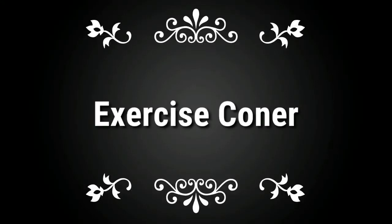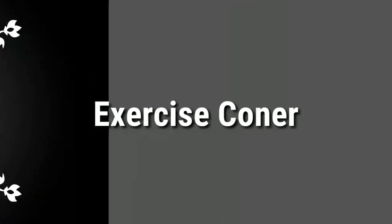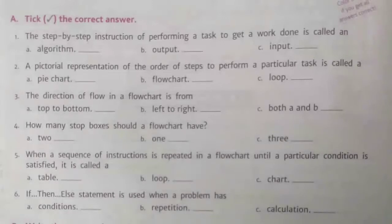Good morning dear children. Today let's discuss the exercise corner of our 10th chapter, algorithms and flowchart. Take page number 122. Here we can see 'tick the correct answer' — 6 questions are given. We need to choose the correct answer from the options and tick the correct one. Let's move to our first question.